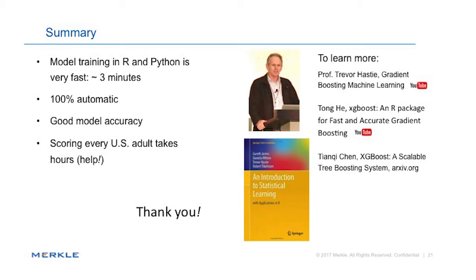So XGBoost — it's the third generation boosting algorithm. It's got parity in Python and R, which is really important to us. It's 100% automatic once you pick the hyperparameters — two minutes to build a lot of these with really good accuracy. Our challenge now is scoring: if anybody has experience scoring XGBoost with 30 billion rows, I'll buy you a drink. Getting the training to scale is easy; getting the scoring to scale is the big challenge. There's wonderful free material on YouTube, including lectures from the guy who wrote the R package, and the original paper is available widely on the web.